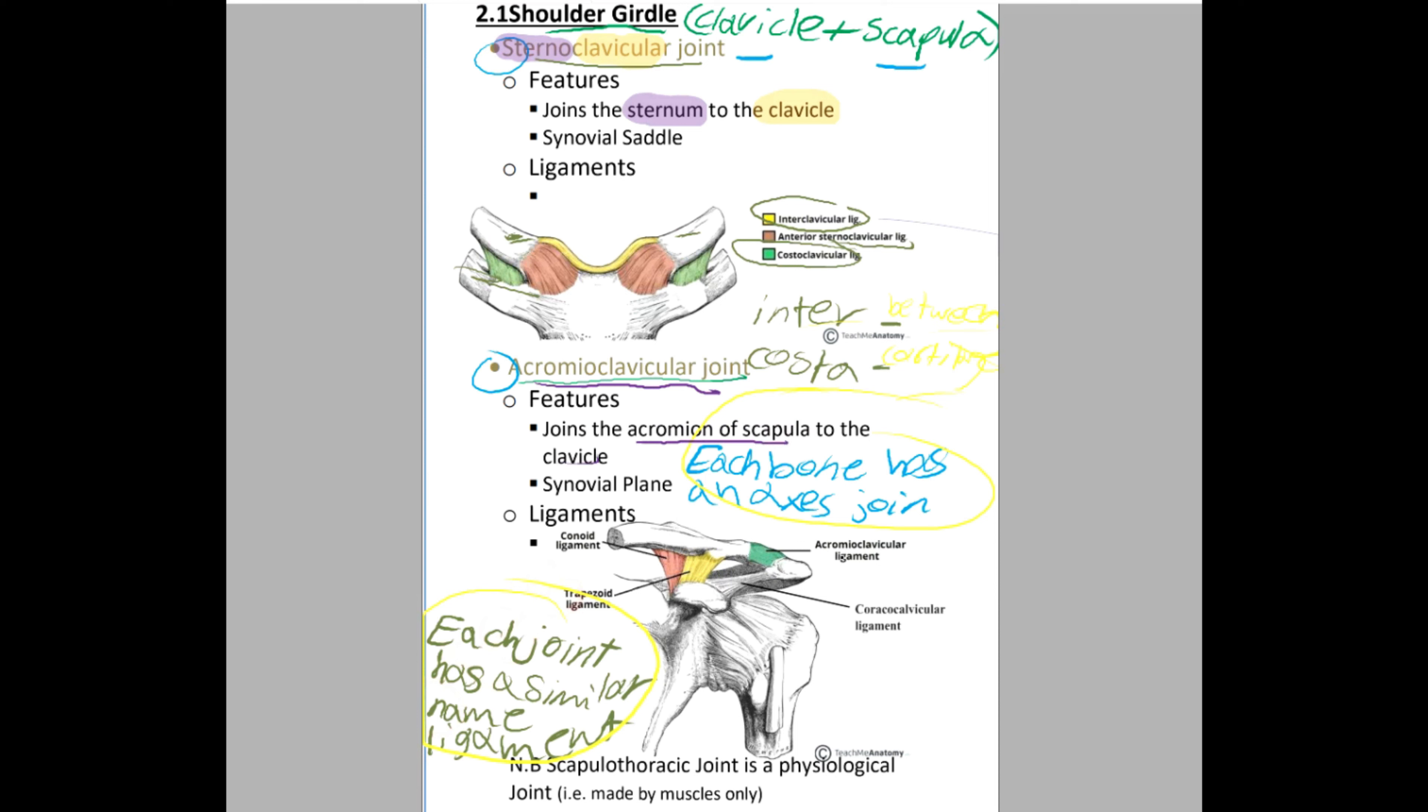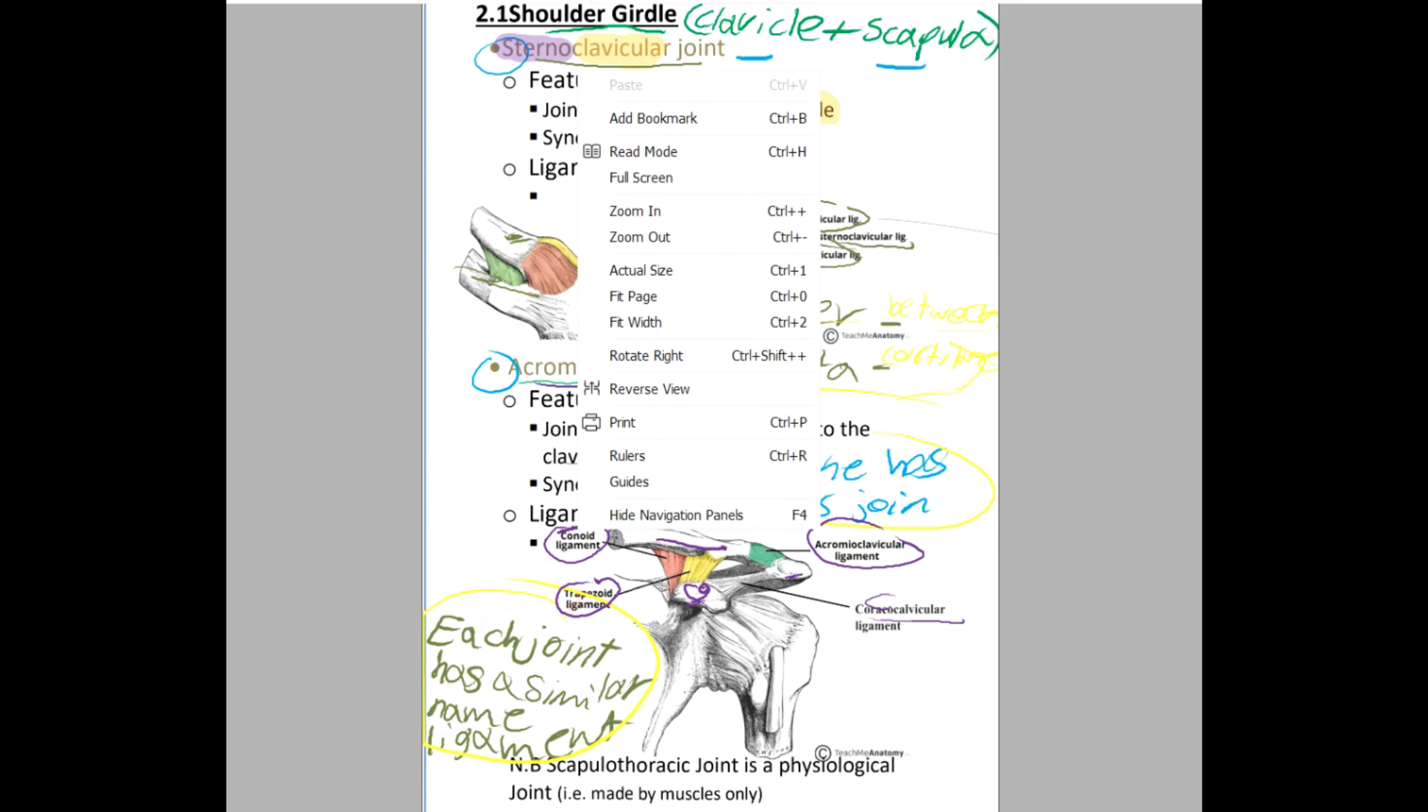On the name of the joint we have the acromioclavicular ligament, that's easy, and two other extrinsic ligaments. You have noticed that this is the coracoid process and this is the acromion, so this is the coracoacromial ligament. The third ligament here is called the coracoclavicular ligament and is divided into two parts: one like a trapezium called trapezoid ligament and one like a cone called conoid ligament. The suffix oid means like, so conoid ligament is a ligament like a cone and same for the trapezoid.